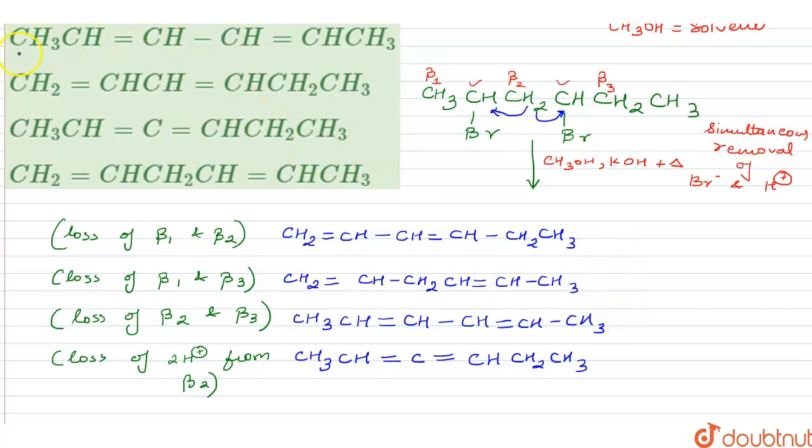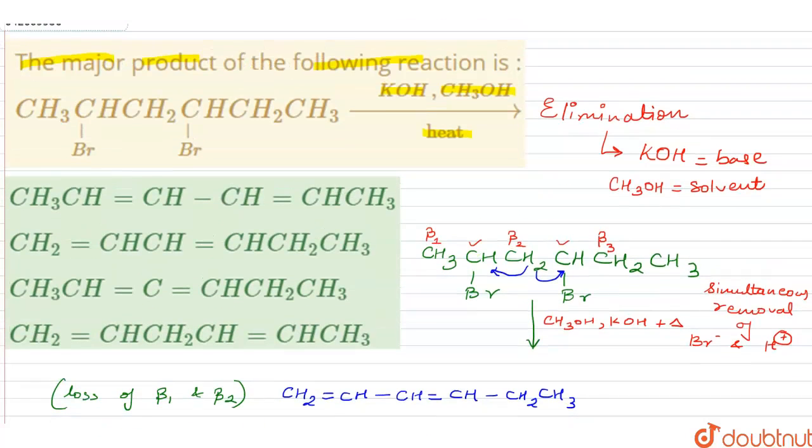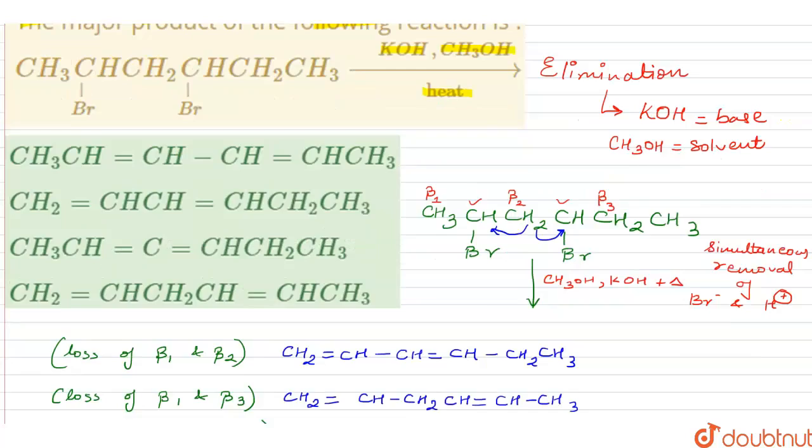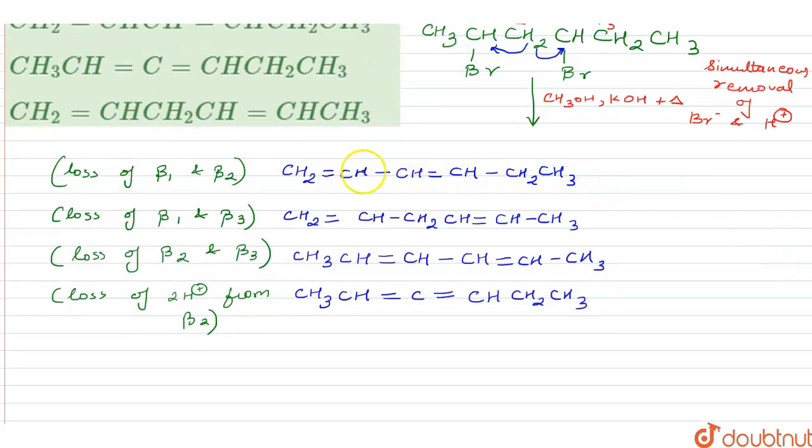Now among these given alkenes or the alkadienes to be very specific, which of them would be the most stable? The one which is going to be the most stable is going to be the major product. Let me first of all label them as A, B, C, and D. One thing is for sure that my D product cannot be stable, obviously due to the presence of the two adjacent pi bonds on the adjacent positions, and definitely that is going to cause a lot of repulsion.